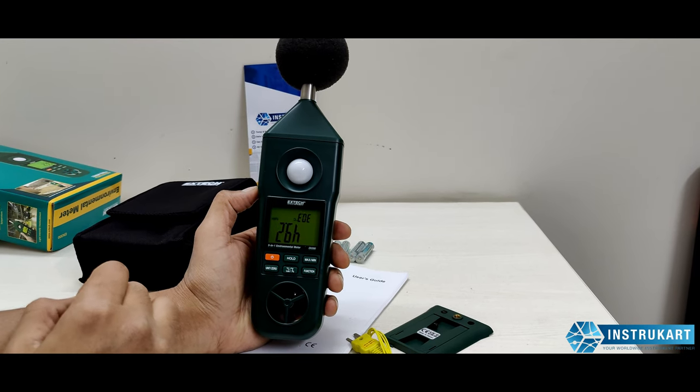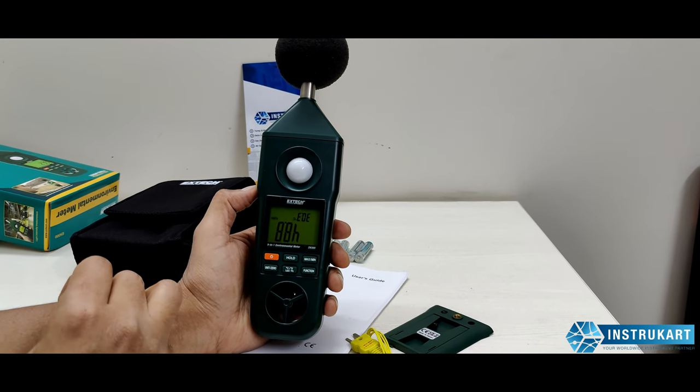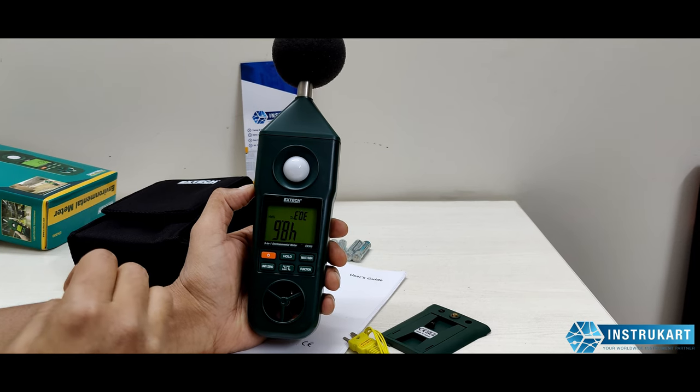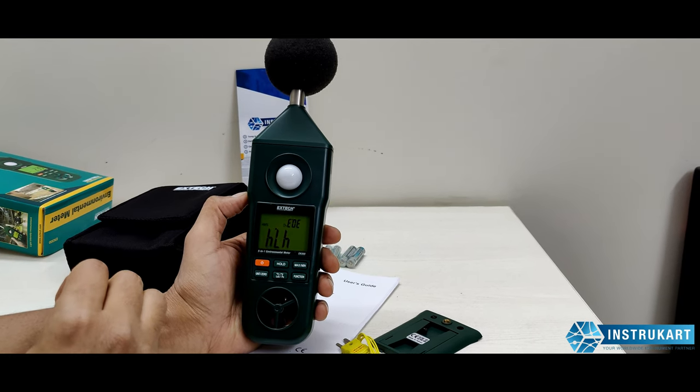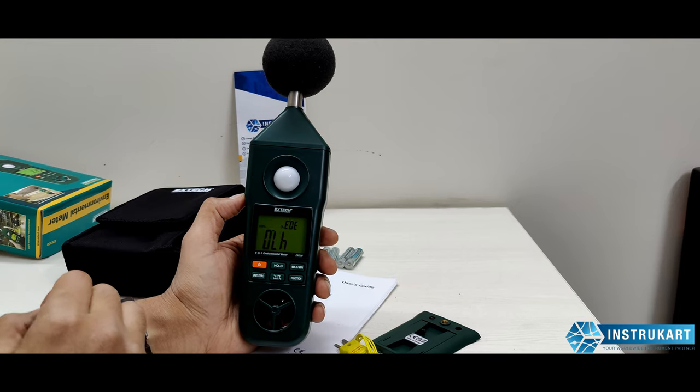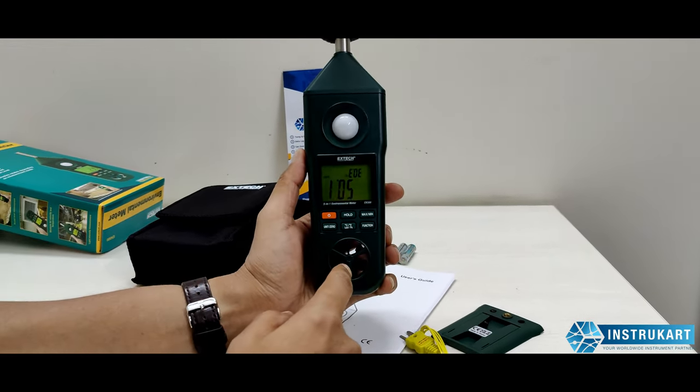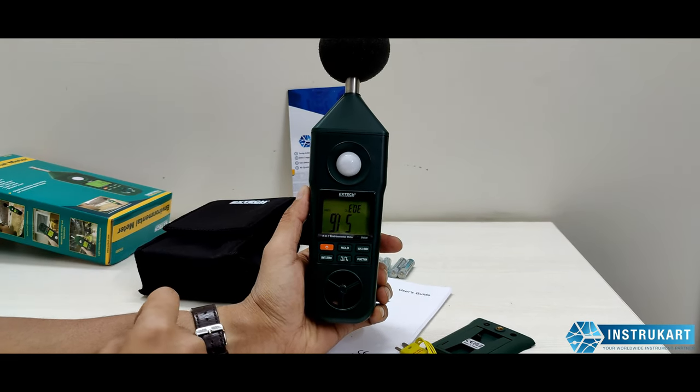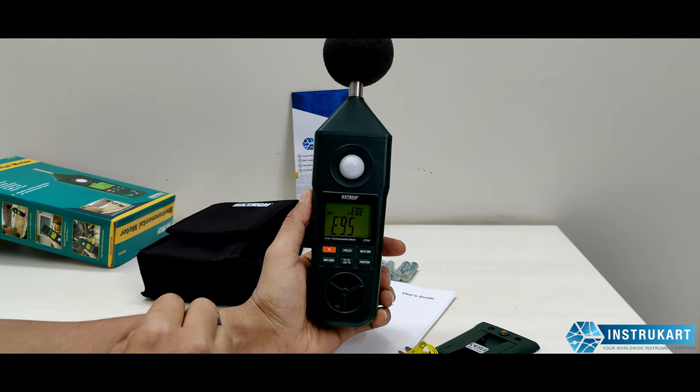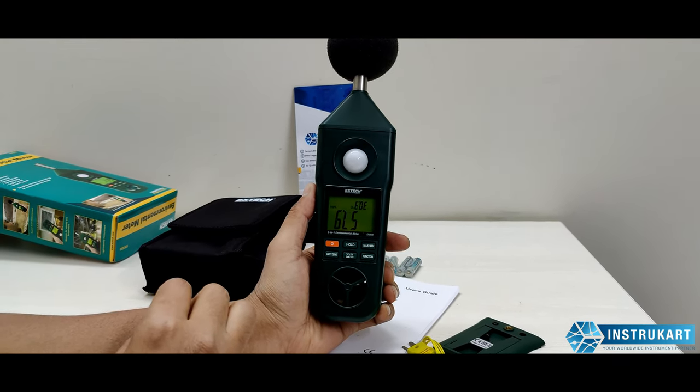For humidity, it measures 10 to 95 percent RH with an accuracy of plus or minus 4 percent RH. It also does air velocity measurement up to 30 meters per second with an accuracy of plus or minus 3 percent.